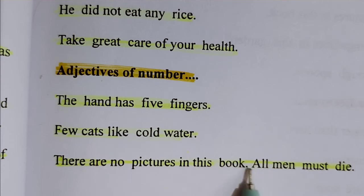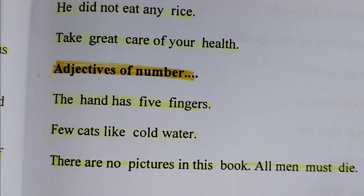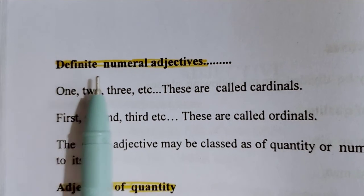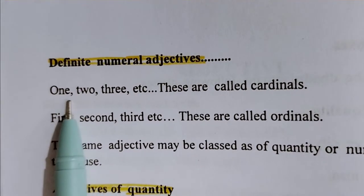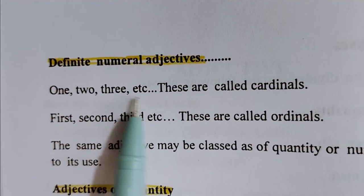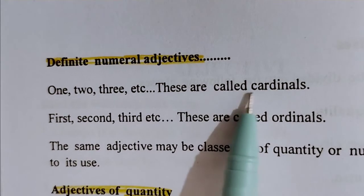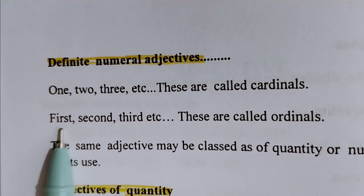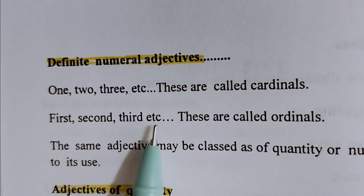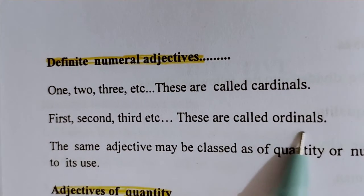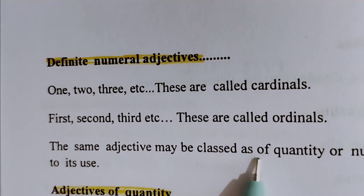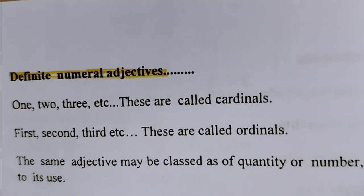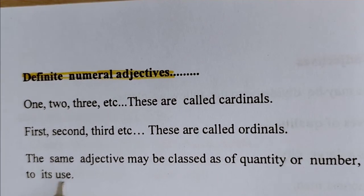Adjectives of number: 'The hand has five fingers,' 'Few cats like cold water,' 'There are no pictures in this book,' 'All men must die.' Definite numeral adjectives: one, two, three, etc. are called cardinals; first, second, third, etc. are called ordinals. The same adjective may be classed as of quantity or of number according to its use.